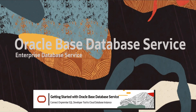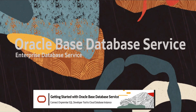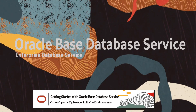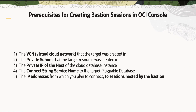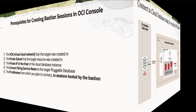To prepare for this demo we will need to gather the following information about the database service that we will connect to. We will need to collect the VCN, the private subnet, the private IP of the host supporting the cloud database instance, and the service name from the connect string to the cloud database instance. We will also need the IP address or addresses that you plan to allow to connect to the cloud database instance.